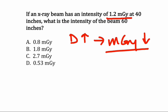Our initial exposure, our initial intensity, was 1.2 milligray. Our new milligray, our new intensity, must decrease. So we can immediately eliminate 1.8, and we can immediately eliminate option C, which is 2.7.